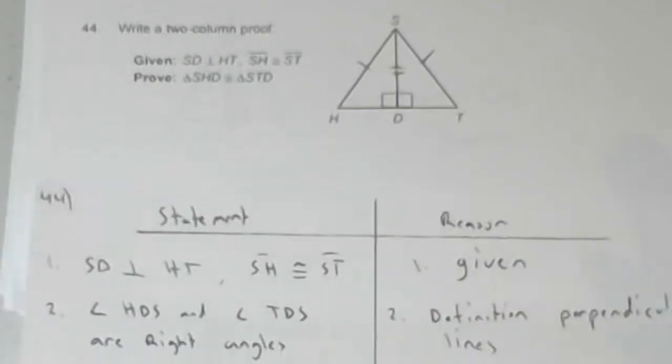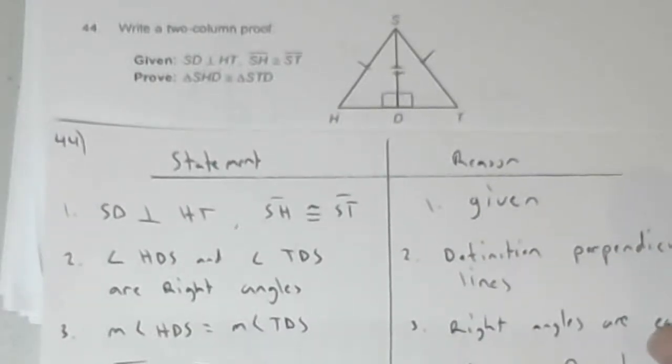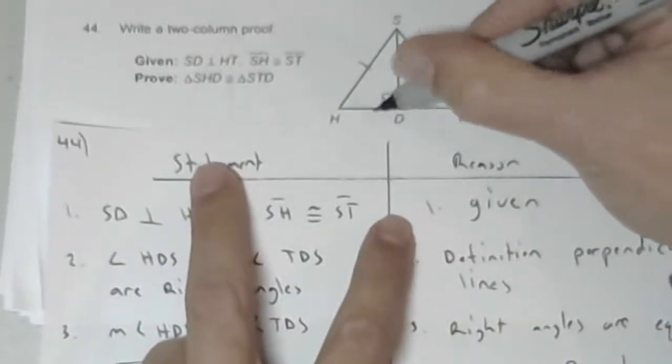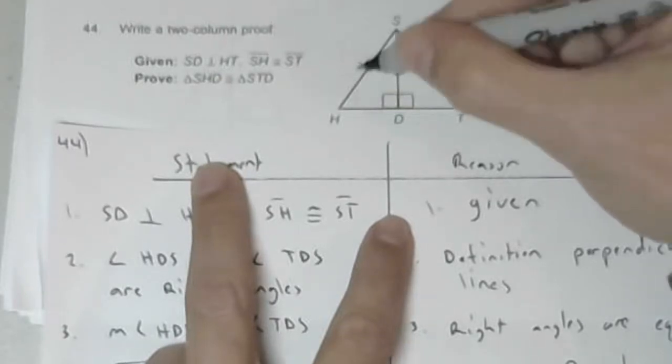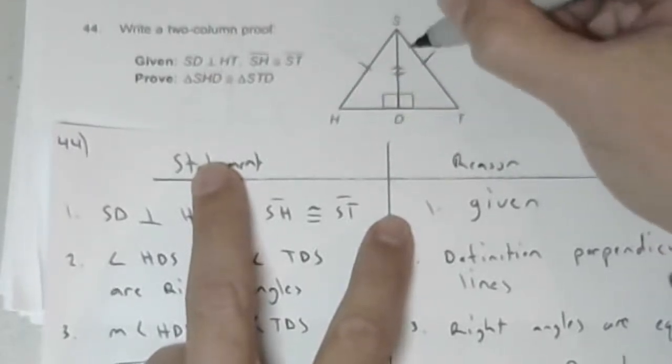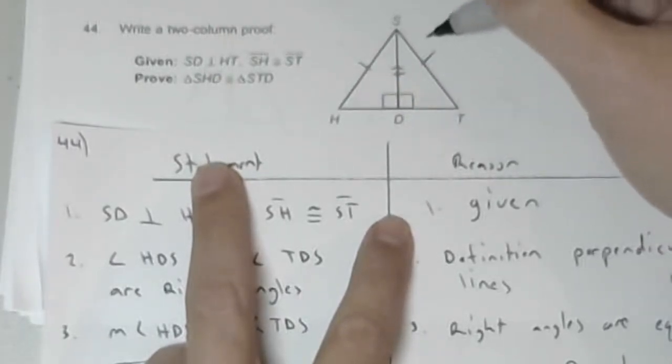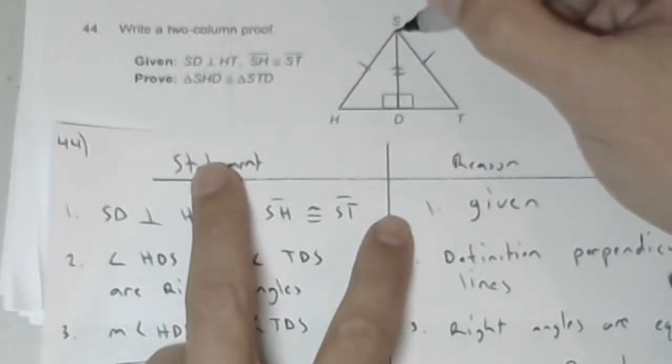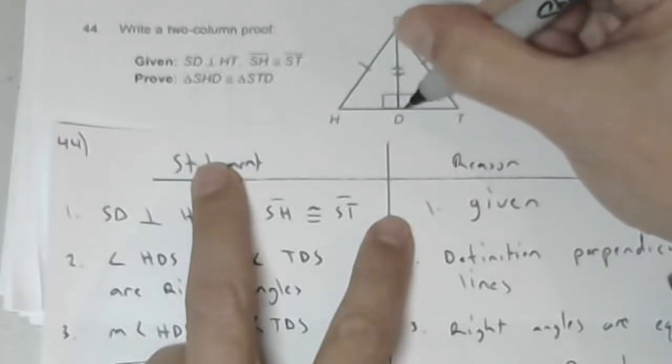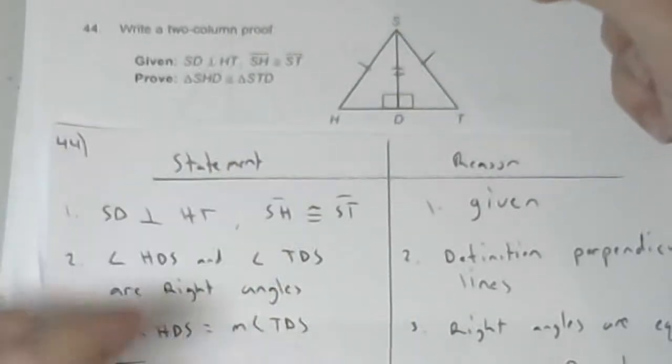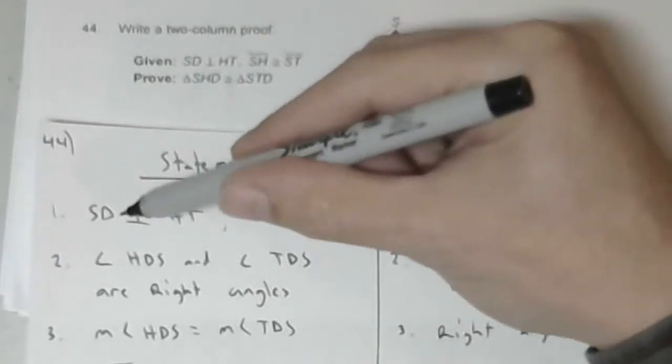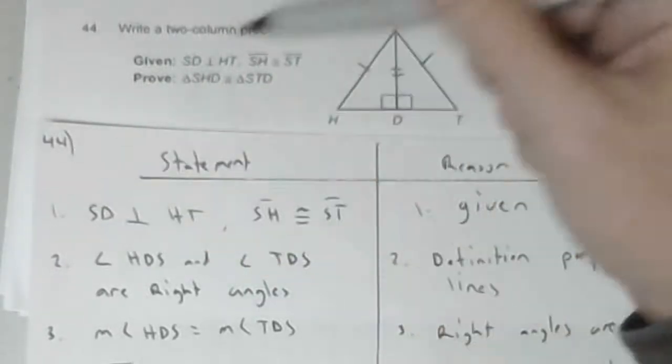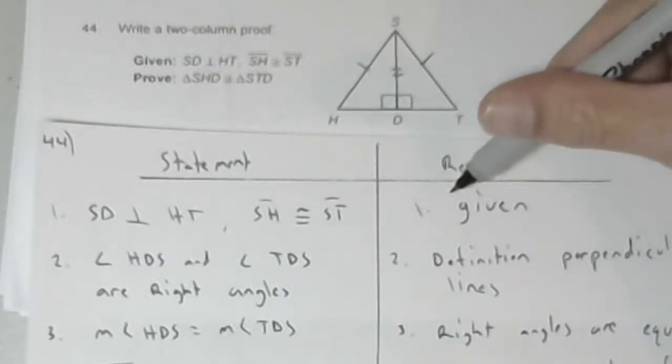Problem 44 wants us to write a proof. Given SD is perpendicular to HT and SH is congruent to ST, prove triangle SHD is congruent to triangle STD. At least part of the given, in this case both parts of the given, are always number one for the statement. The reason for number one is always given.